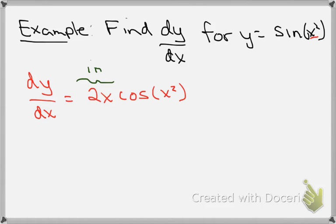So again, the inside gives me the derivative of 2x, and the outside gives me cosine of x squared. And so that problem is done.